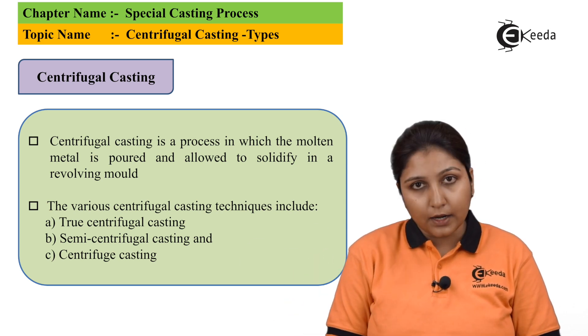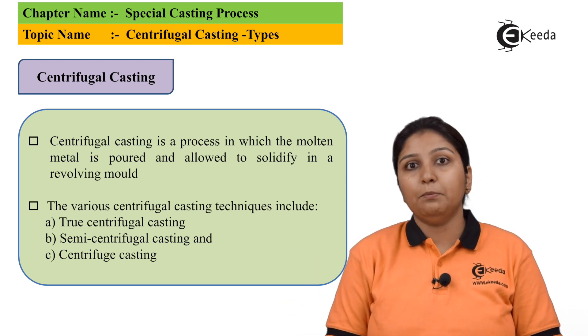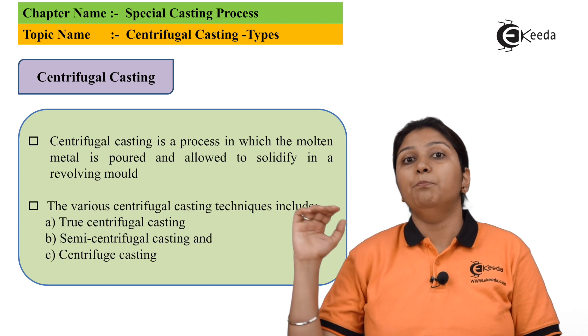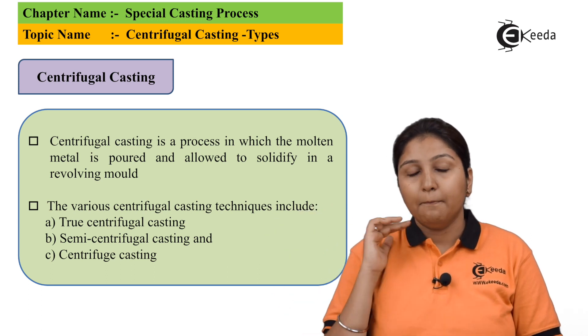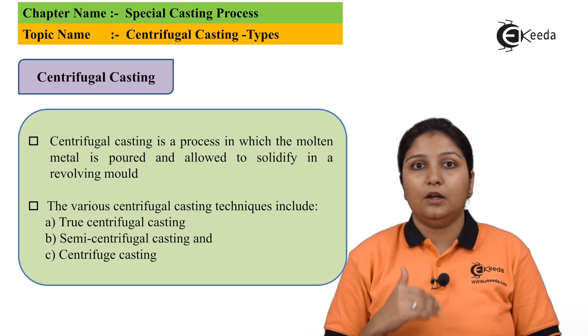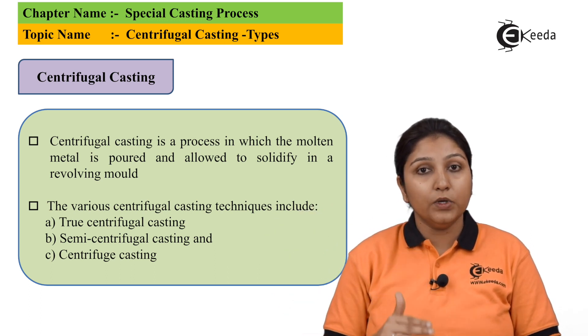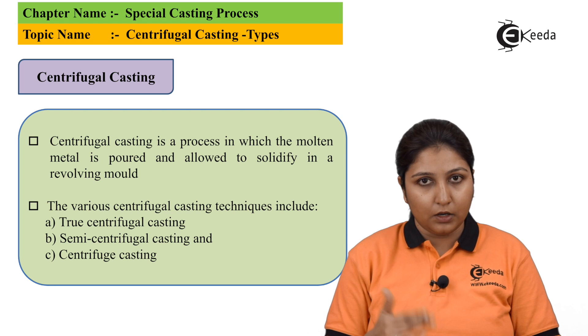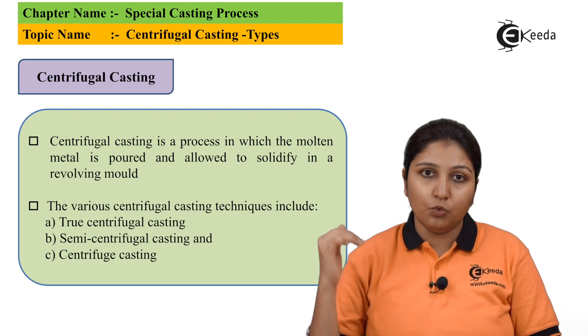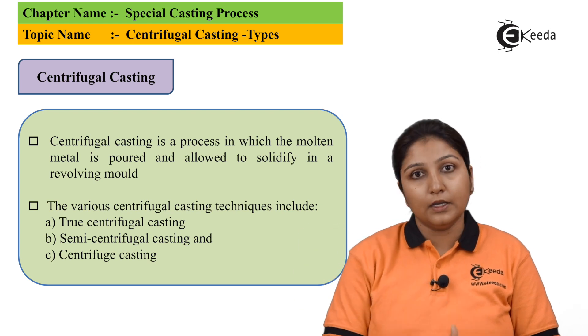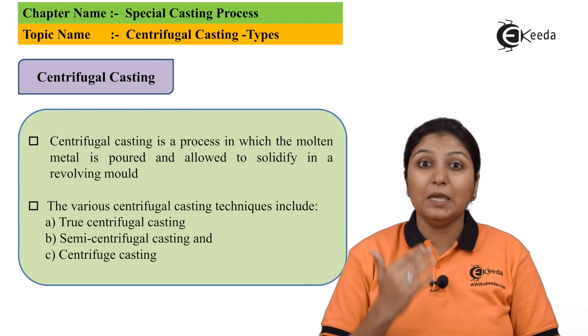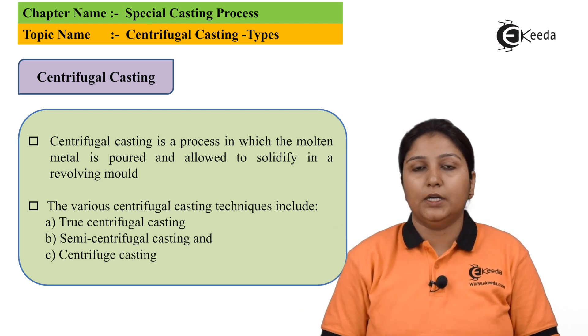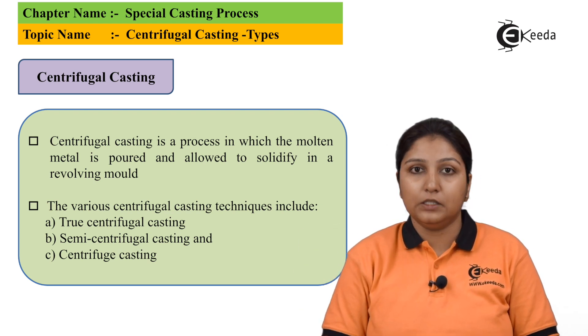In this diagram, we can see that molten metal is being poured into a centrifugal casting which is revolving continuously, and your molten metal is getting inside. A pipe-shaped object can be made easily.